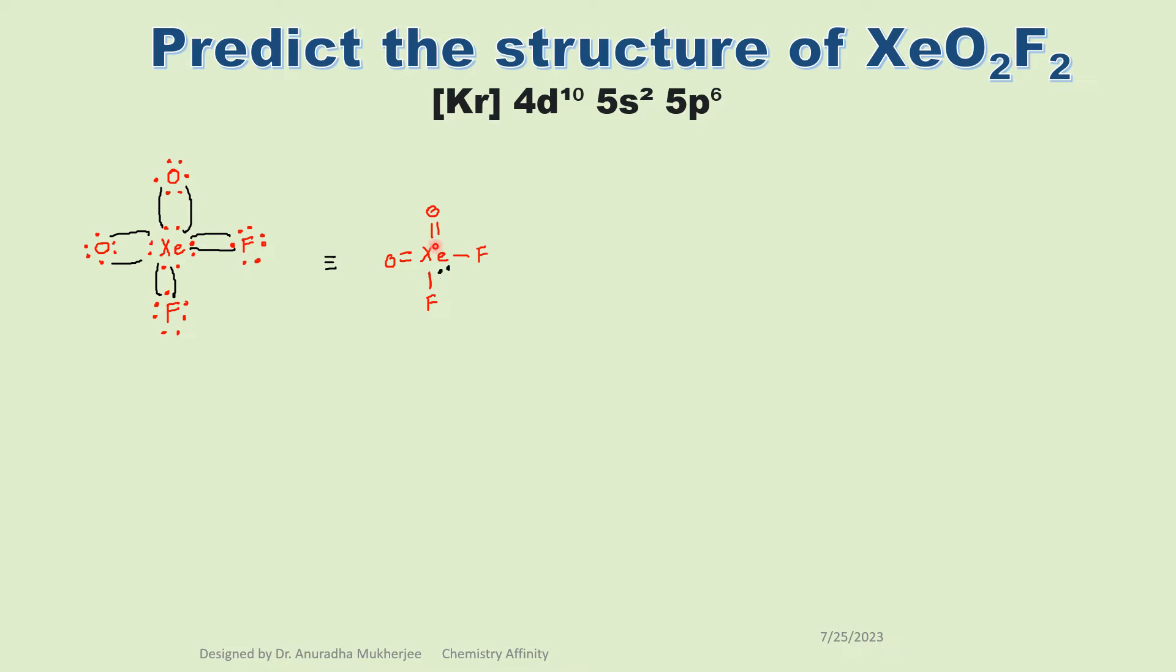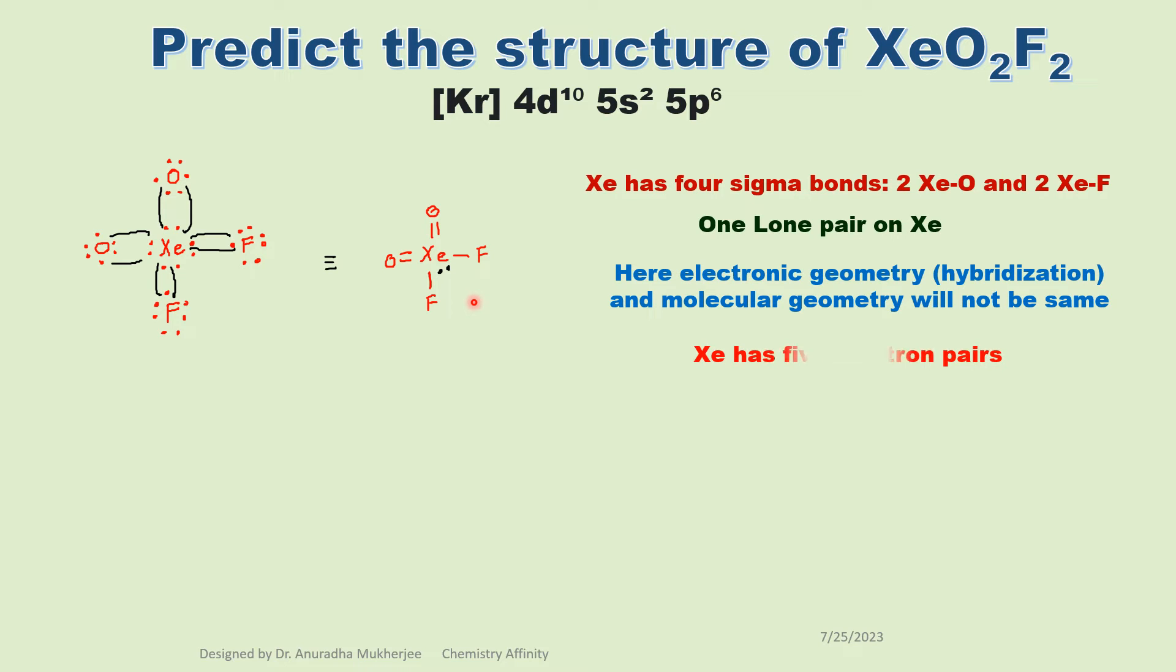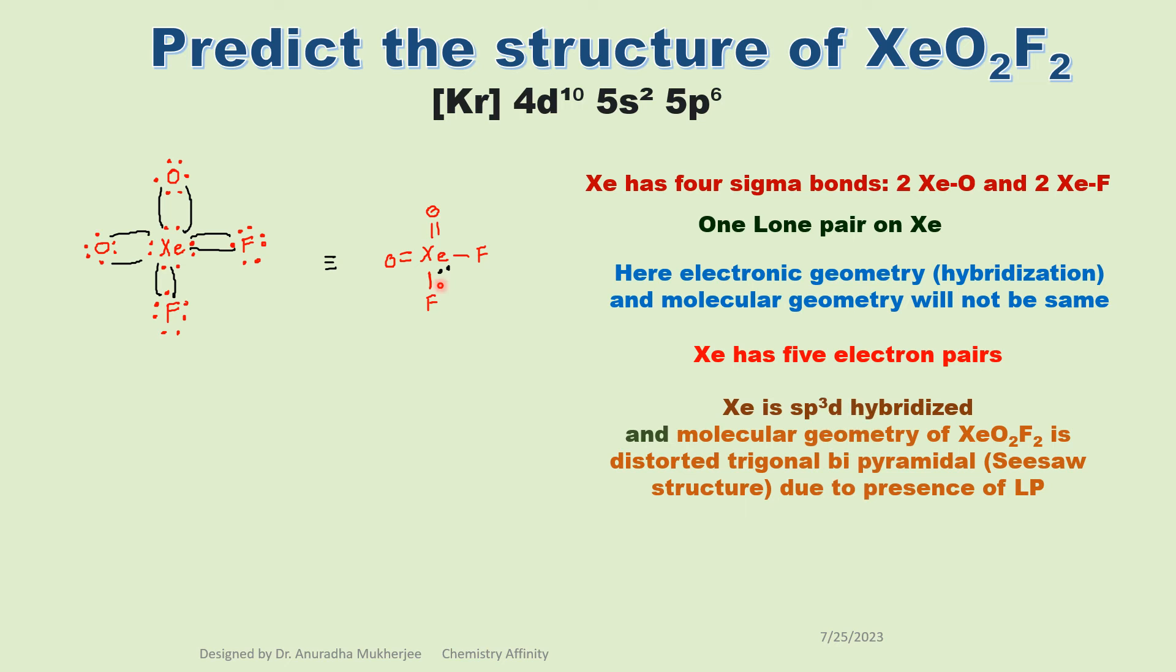When we want to find out the hybridization of the central element, we have to check the number of sigma bonds and lone pairs. So here xenon has 4 sigma bonds and 1 lone pair. That means it is 5 electron pairs. 5 electron pairs means xenon hybridization is sp3d, and sp3d hybridization means molecular geometry should be trigonal bipyramidal.